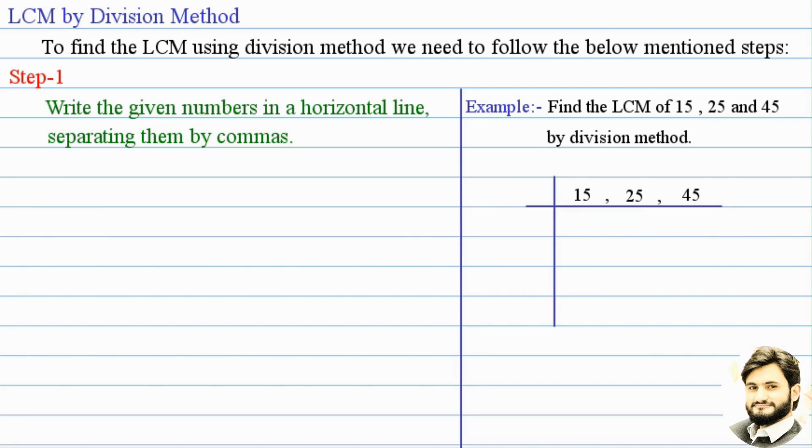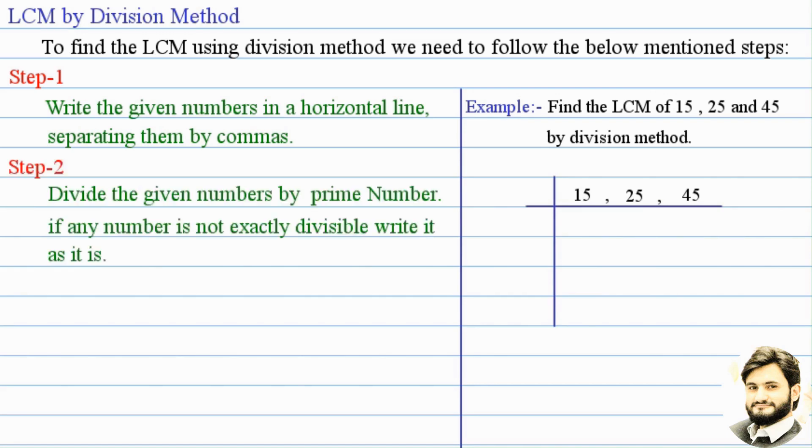Step 2. Divide the given numbers by prime number. If any number is not exactly divisible, write it as it is.